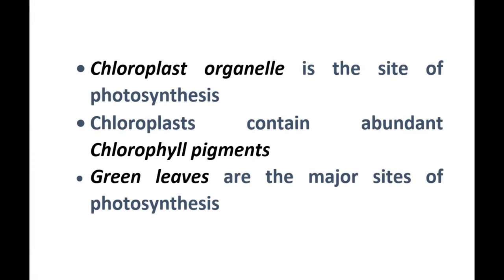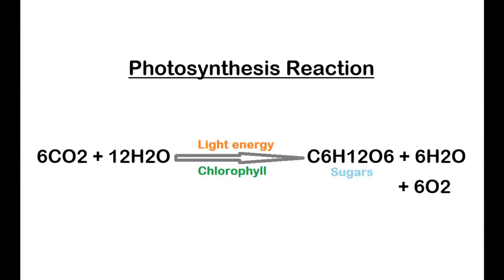Photosynthesis takes place inside cellular organelles called chloroplasts, which contain abundant photosynthetic pigments called chlorophyll. Chloroplasts are found in abundance in green leaves and are therefore the major site of photosynthesis in plants. Gaseous oxygen is a major byproduct of the process of photosynthesis. The chemical reactions that take place in this process may be summarized as follows.